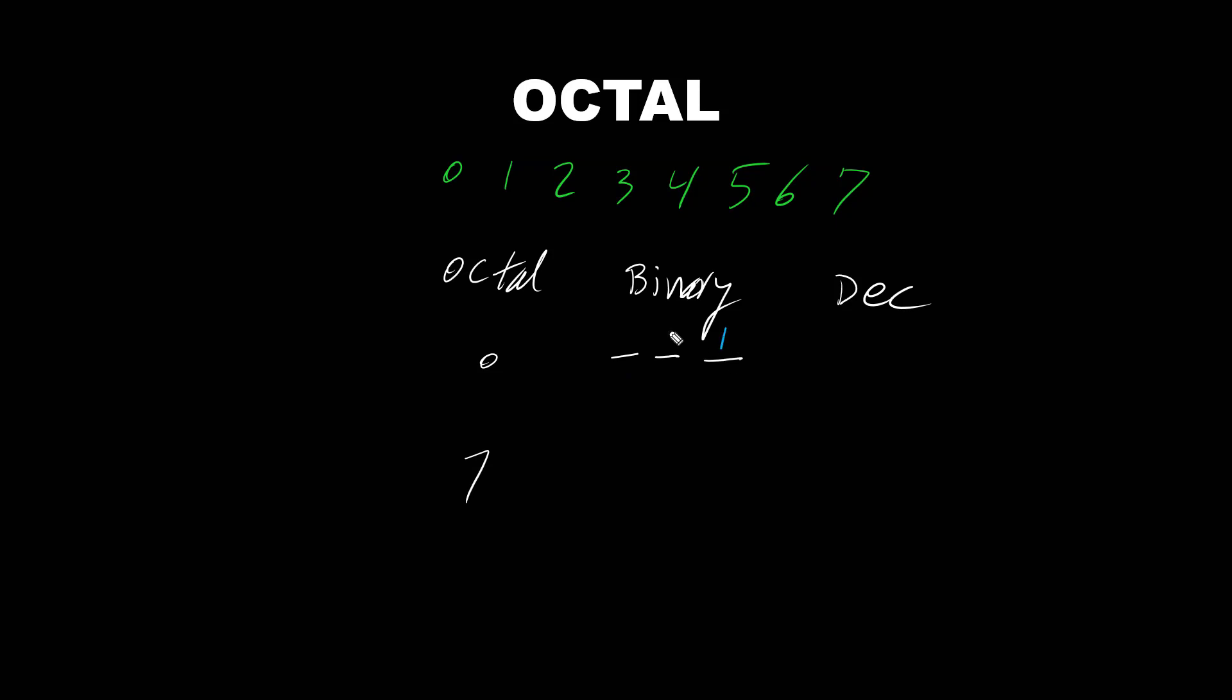So decimal values for the binary 1, 2, 4. Where they coming from? 2 to the power of bit position. This is bit position 0. This is bit position 1, and this is bit position 2. 2 to the power of 1 is 2. 2 to the power of 2 is 4.